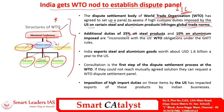Indian exports of steel and aluminium goods to the US are worth 1.6 billion US dollars annually. If these trade distortions continue and proper actions are not taken through the WTO, it may widen the current account deficit as India has a trade surplus with the US. Consultation is the first step in the dispute settlement process; if not mutually agreed, it will be taken to the dispute settlement body, which passes a verdict over the disputed area.